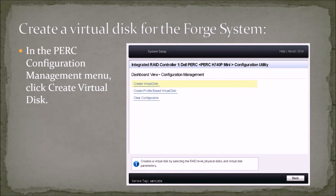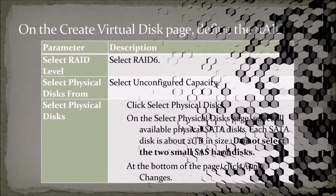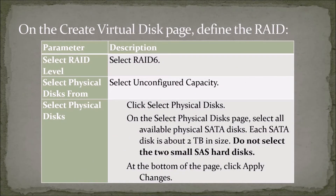Create a virtual disk for the Forge system. In the PERC configuration management menu, click Create Virtual Disk. On the Create Virtual Disk page, define the RAID level — select RAID 6. Select physical disks from unconfigured capacity. To select physical disks, click Select Physical Disks. On the Select Physical Disks page, select all available physical SATA disks. Each SATA disk is about 2 TB in size.